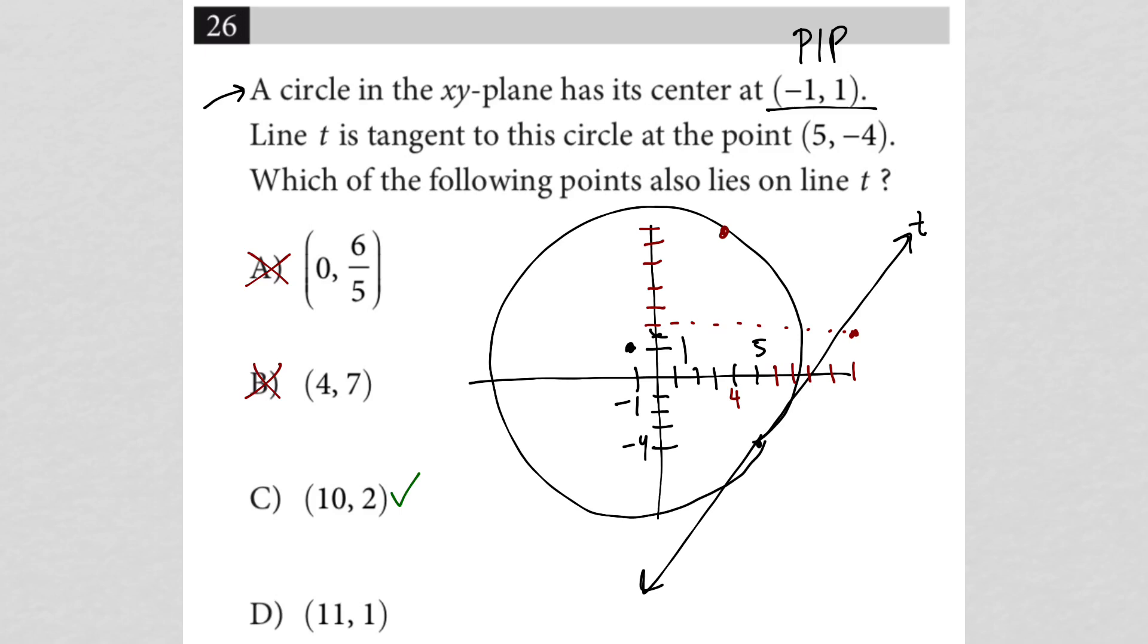And then choice D, 11, 1. So that's just going to go one more over to 11. Again, that's 10, and 11, 1 would be here. So that would be there, just a little bit further away from my line. So if I had to choose, I'd say that 10, 2 is better.